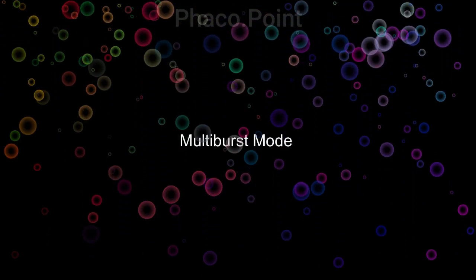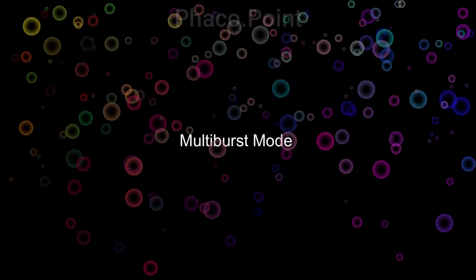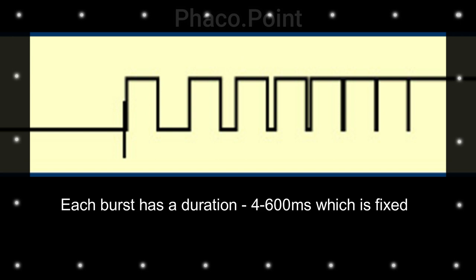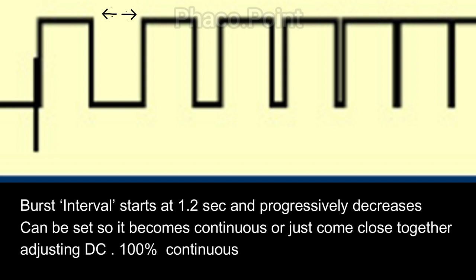Finally, we come to the multi-burst mode, which many people use primarily in very hard cataracts. It consists of multiple bursts, and each burst fires at the maximum preset power. As you press linearly, the bursts come closer together. Each burst has a duration which can vary from 4 to 600 milliseconds, and this is usually fixed. The burst interval starts at 1.2 seconds in the Stellaris machine and progressively decreases so that it can either become continuous or just come close together. We can adjust this by adjusting the duty cycle — setting it at 100% makes the burst mode continuous toward the end, and at 50% it becomes like pulse FACO.